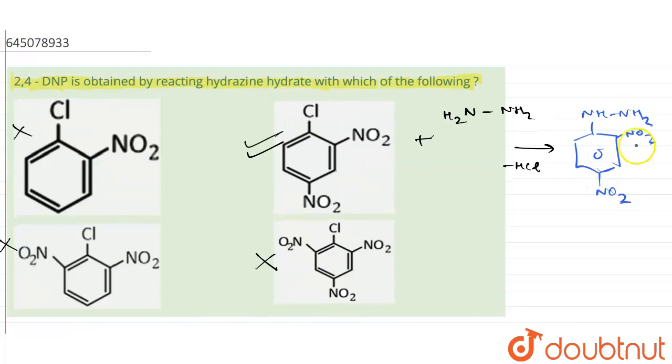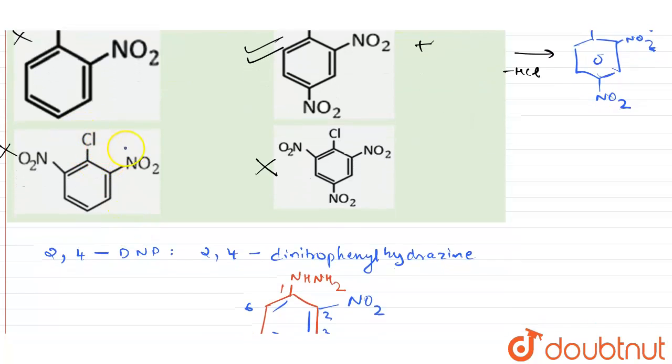So this will be the correct answer. Now if you check with the other molecules also, in this case what will happen, HCl will be removed and here also HCl will be removed. So the product which I'm going to obtain in this part would be, if you see carefully, it is going to be NH-NH2.